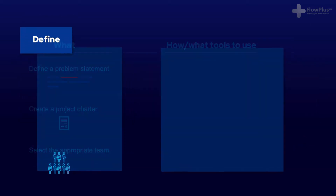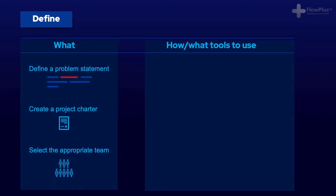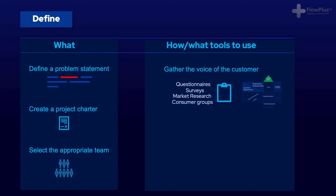Define, the first step, refers to defining the problem in a problem statement, creating a project charter that outlines the scope of the project, and selecting your team members. So what tools can help with this? Well, depending on the nature of the problem, this may include surveys or questionnaires to gather the voice of the customer.